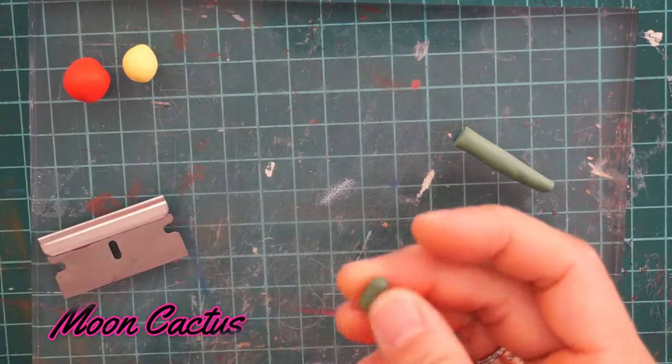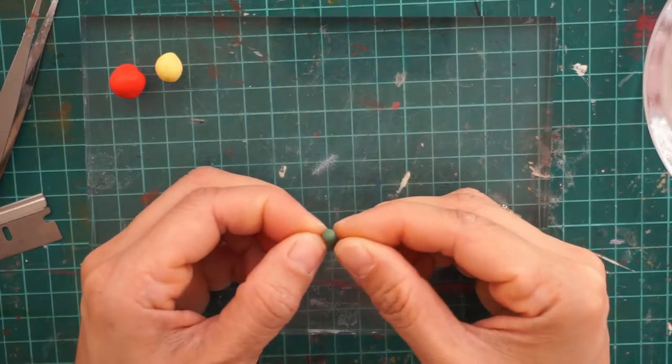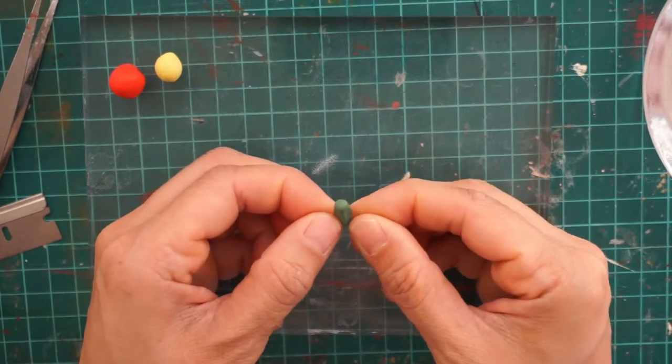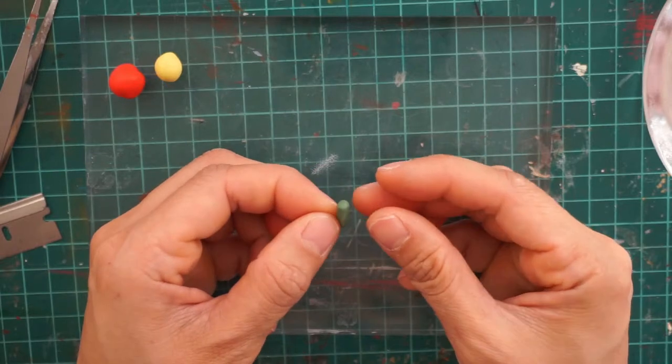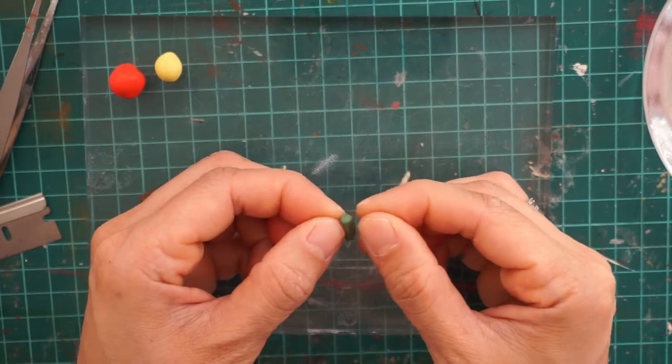First, take green clay and roll it to an oblong shape. Then after that, you can pinch the sides making four corners in total. When you are satisfied with how it looks, you can set it aside and we will start working on the other part.